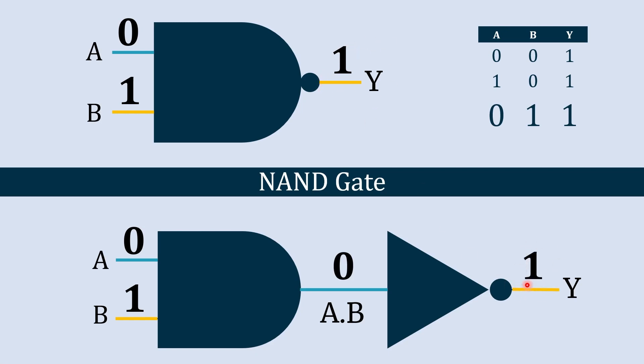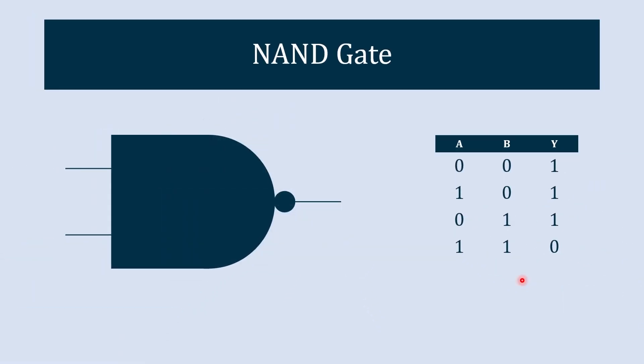Now what happens when both the inputs are one? The output will become zero. How does this happen? When both the inputs are one, the AND operation is also one, and this NOT gate will simply invert the input. So the input is one and the output we'll get is zero. So this is the first universal gate, NAND gate.